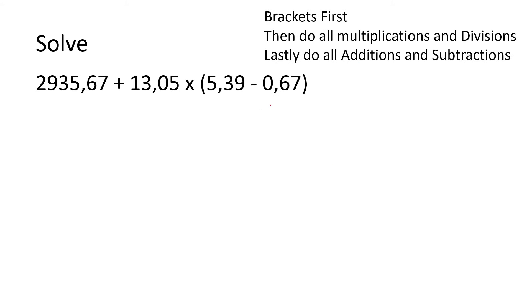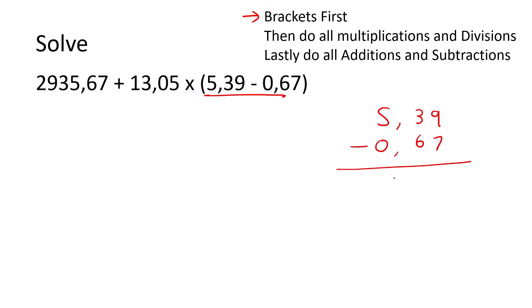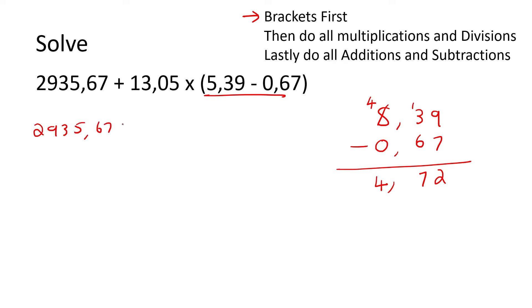Here's our next one. Remember brackets first — so we go do brackets first. We line up all the decimals. Nine take away seven is two. Three cannot take away six, so we borrow and have 13. Thirteen take away six is seven. And four take away zero is four. So now we can rewrite everything: 2935.67 plus 13 comma zero five, multiplied by four comma seven two.